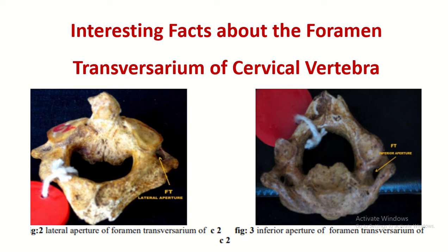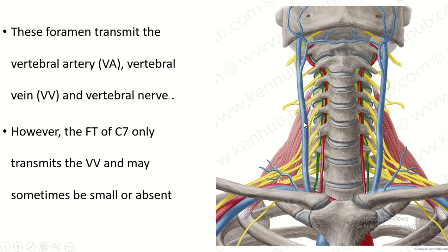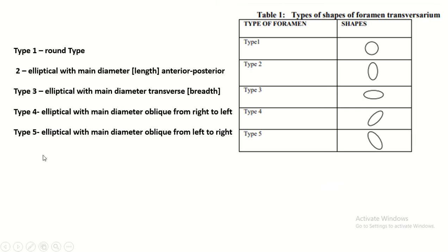Welcome to the Easy Human Anatomy channel. In this video, I discuss interesting facts about the foramen transversarium of the cervical vertebrae. Foramen transversarium are bony canals found only in the transverse processes of cervical vertebrae, and they transmit the vertebral artery, vein, and nerves.